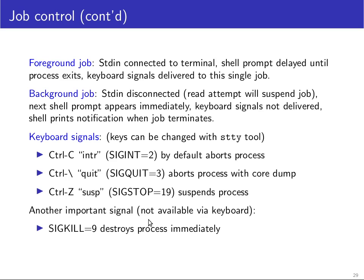There are additional signals. The perhaps most famous one is SIGKILL, or signal number 9. It destroys a process immediately without giving the process any opportunity to handle the signal. In that sense it behaves similarly to the quit signal, but it does not produce a core dump.